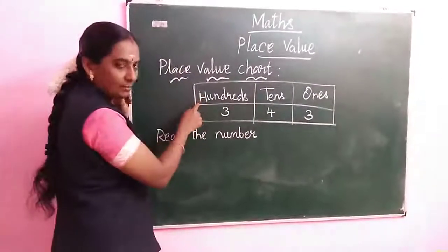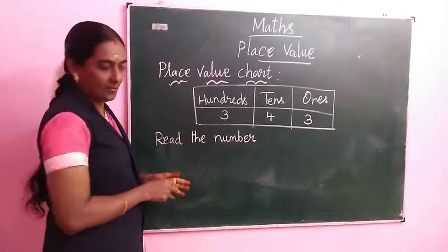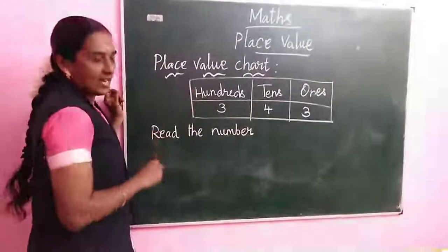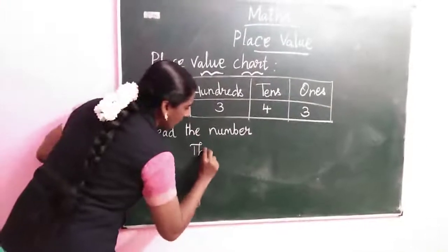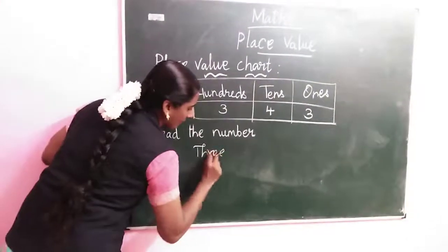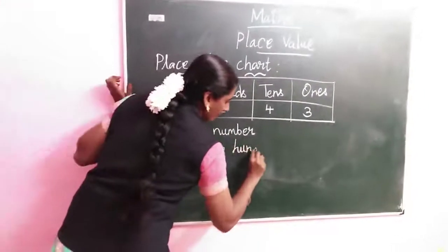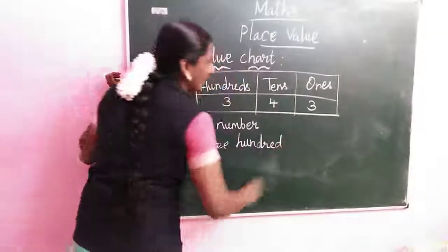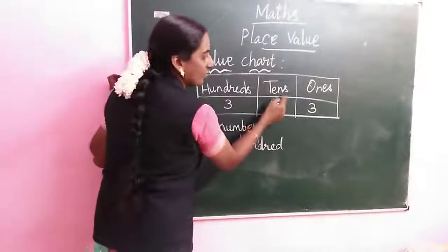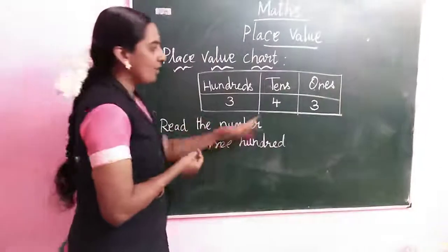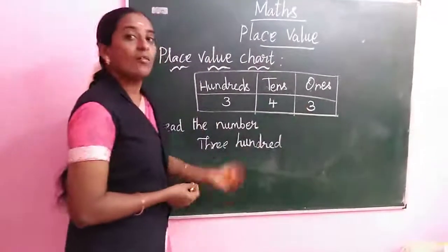100 is your highest place value. How many 100? 300. So write that: 3 hundred. Next, two place values 10 and 1, we are joined and read. 4, 3. How to read?